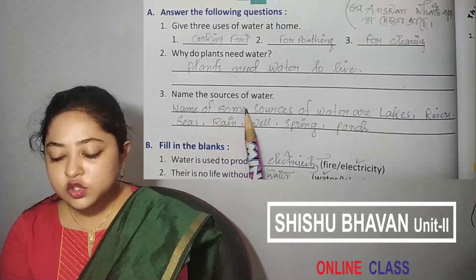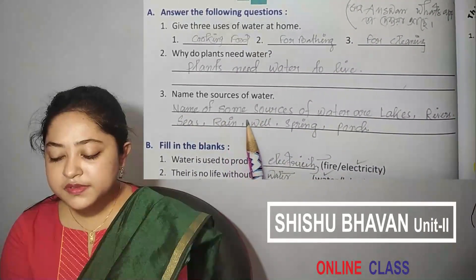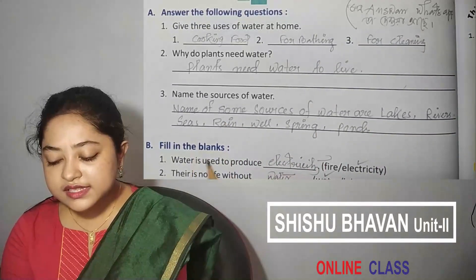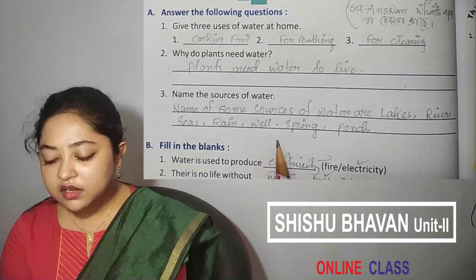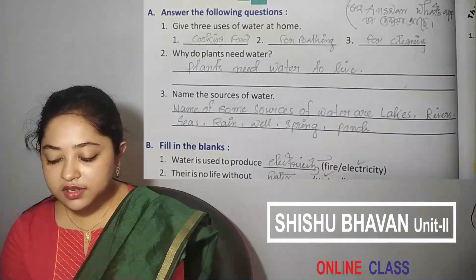Name the sources of water. Some sources of water are lake, river, sea, rain, well, spring, and pond.